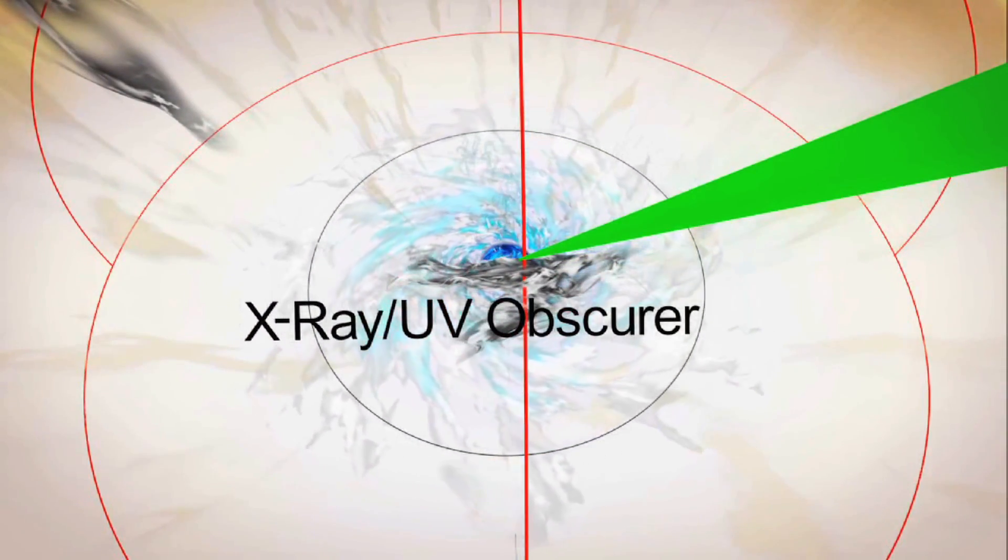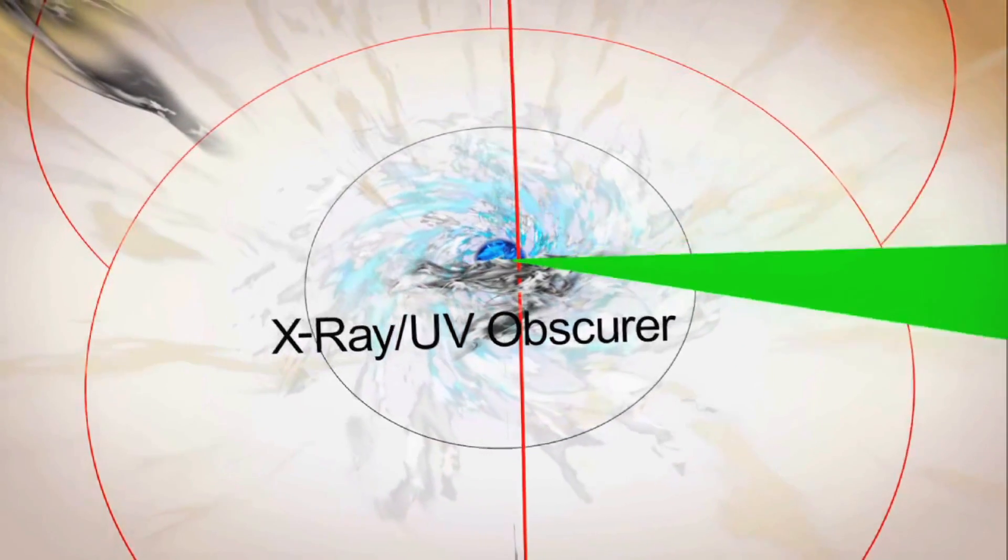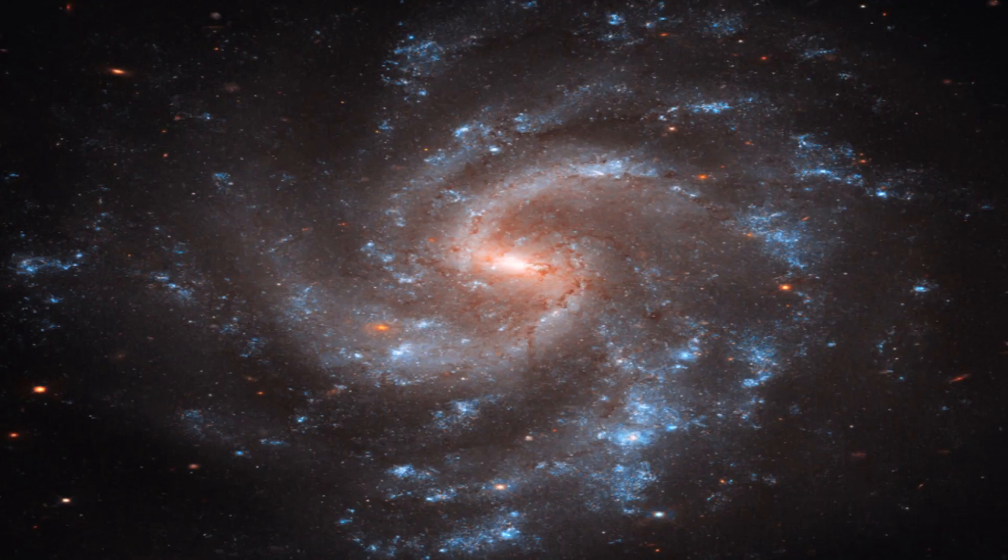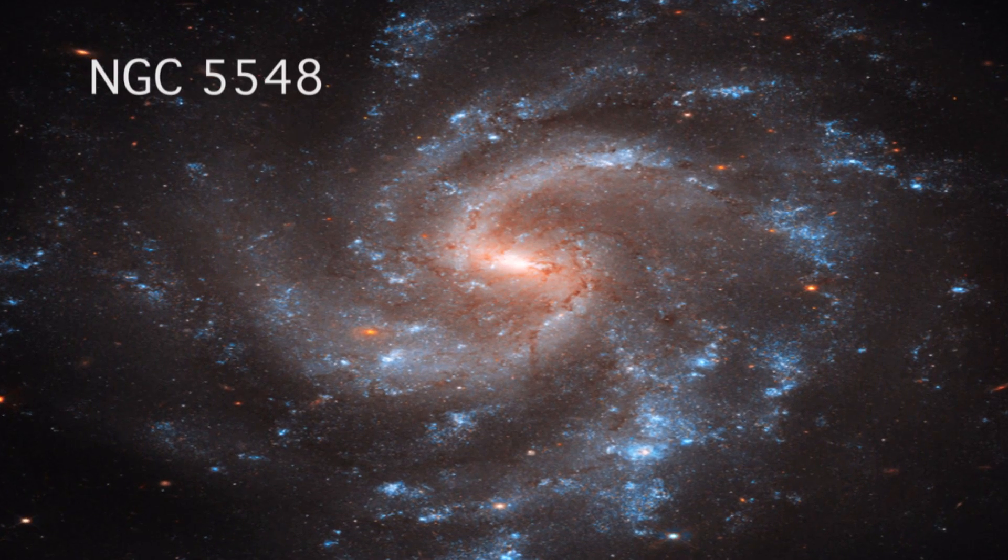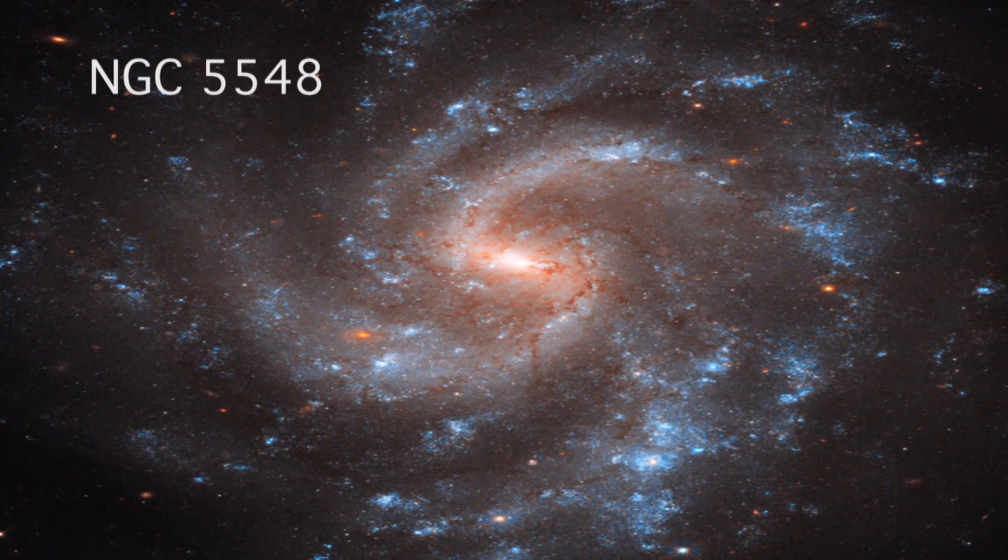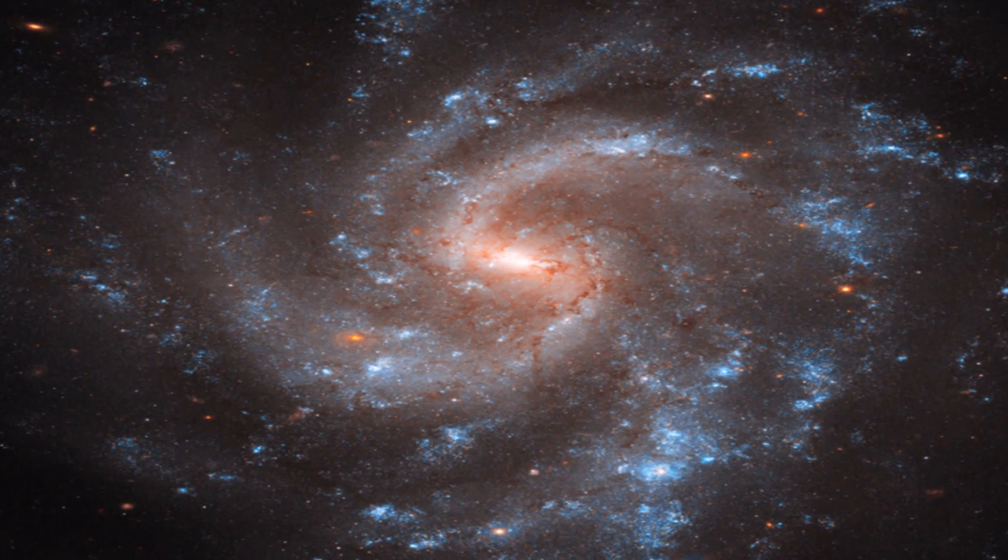In 2013, however, astronomers became aware that one of these super-bright lights had seemingly gone out. This galaxy has an old friend named NGC 5548, one of the best-known active galaxies.